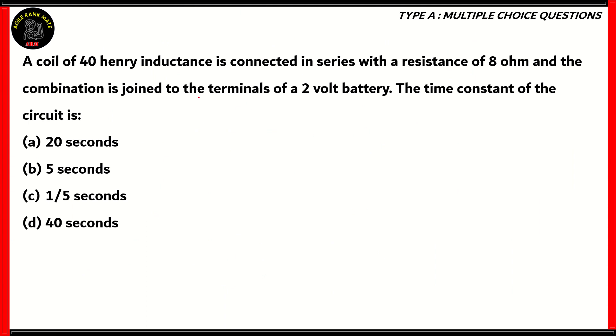Now, let's look at another question. A coil of 40 Henry inductance is connected in series with a resistance of 8 ohms, and the combination is joined to the terminals of a 2 volt battery. What is the time constant of this circuit? Is it 20 seconds, 5 seconds, 1/5 seconds, or 40 seconds?